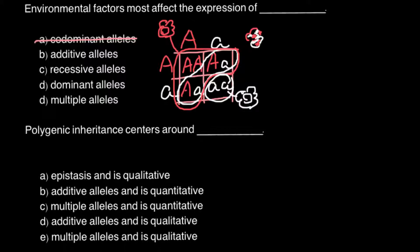Answer C — recessive alleles — the flower would be white-flowered. According to the Punnett square, environment doesn't play a role here either, so we can cross out this answer too. We are now left with two answers: answer B, additive alleles, and answer E, multiple alleles.